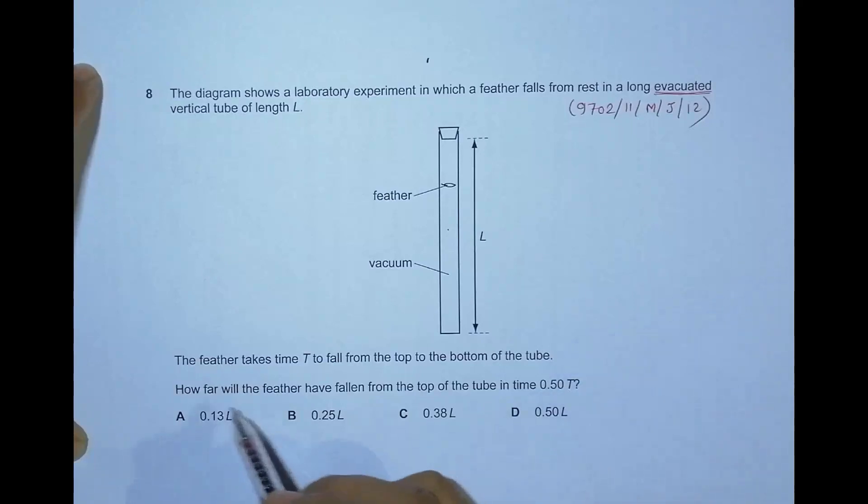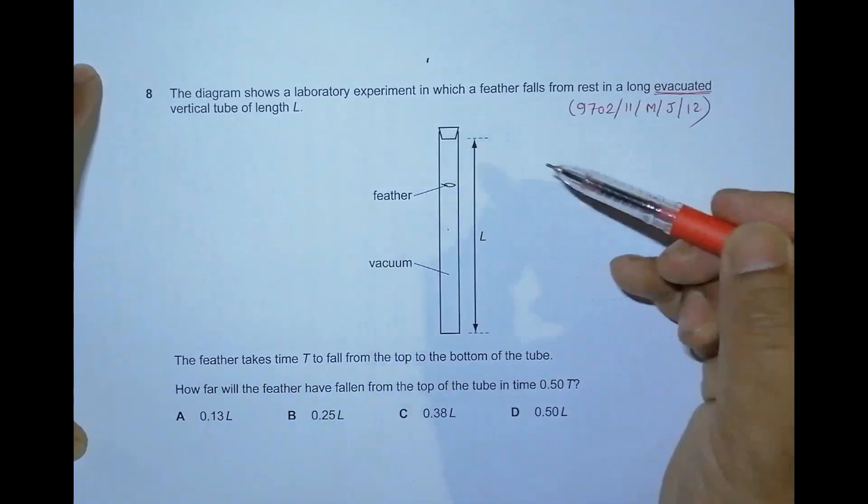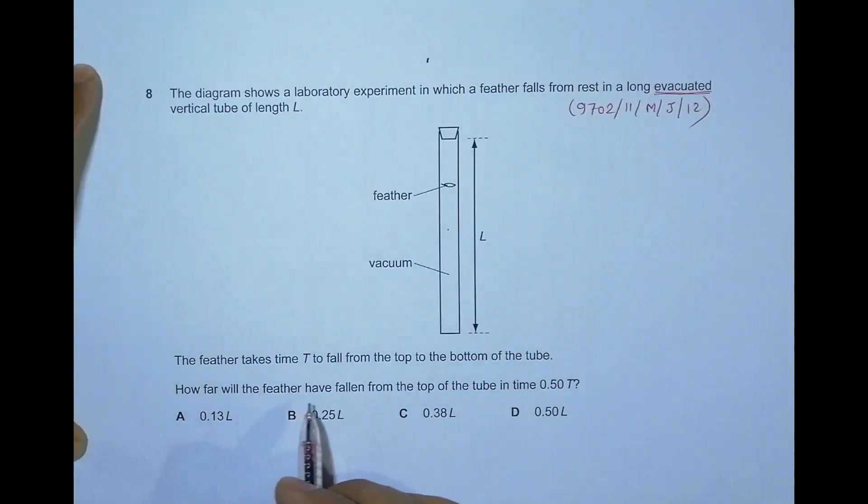It means it is falling freely. The feather takes time t to fall from the top to the bottom of the tube. How far will the feather have fallen from the top of the tube in time 0.50t?